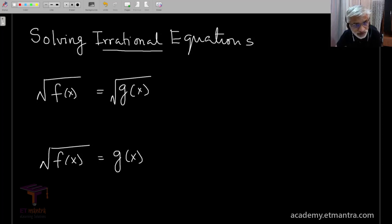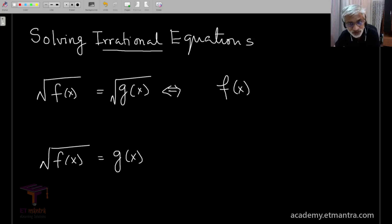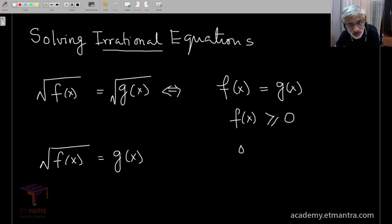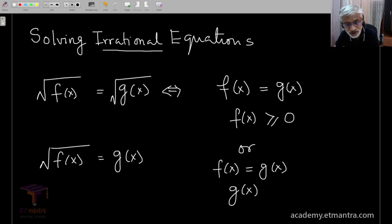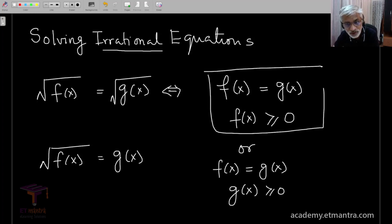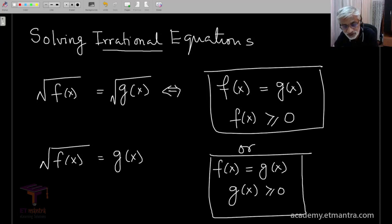The first thing we note is that solving the first type is the same as solving a corresponding set of conditions. We have to ensure that f of x should be positive. Alternatively, we can also achieve the conditions by solving a second set of two conditions. Either one should be okay — if you satisfy and find the values of x, there will be a solution to the problem.